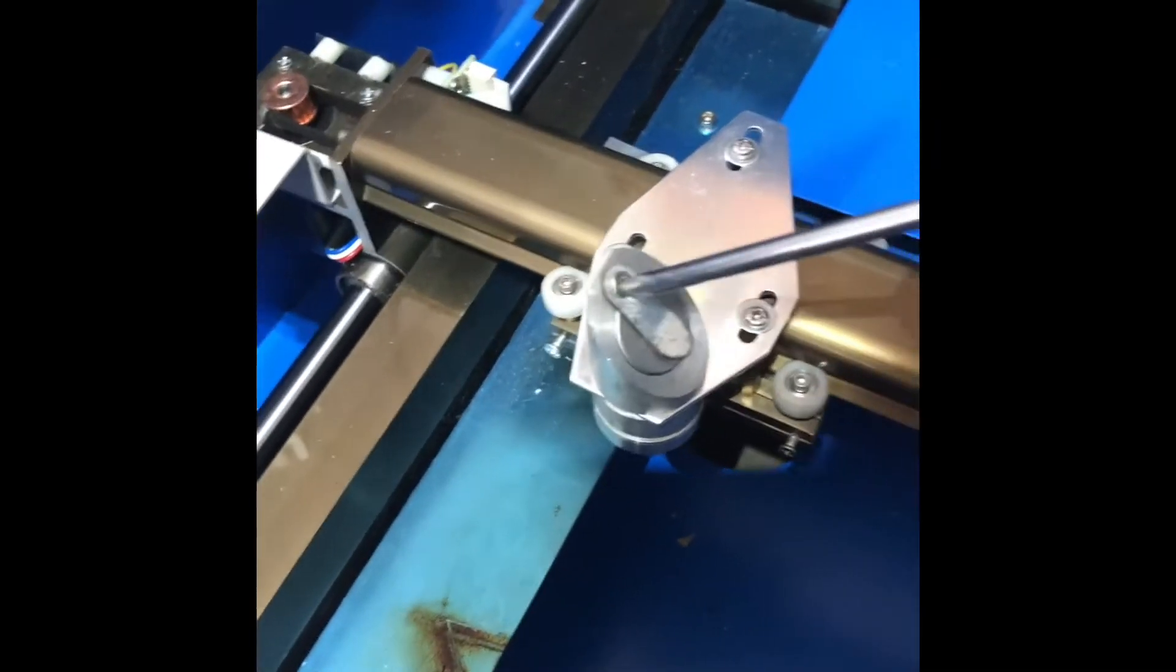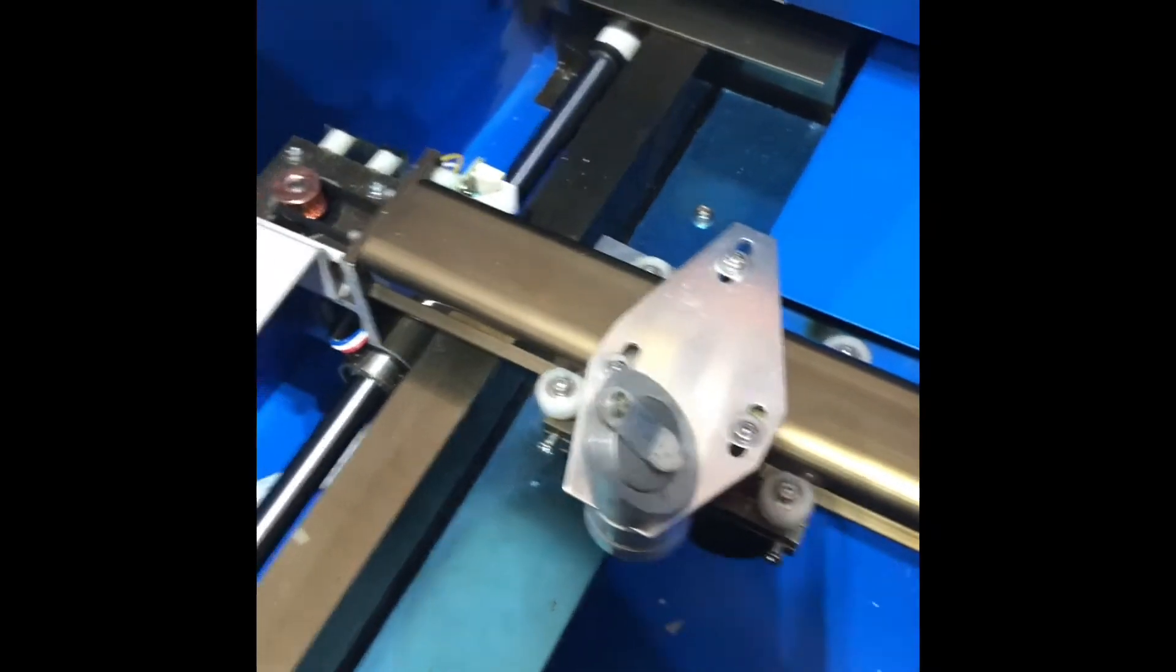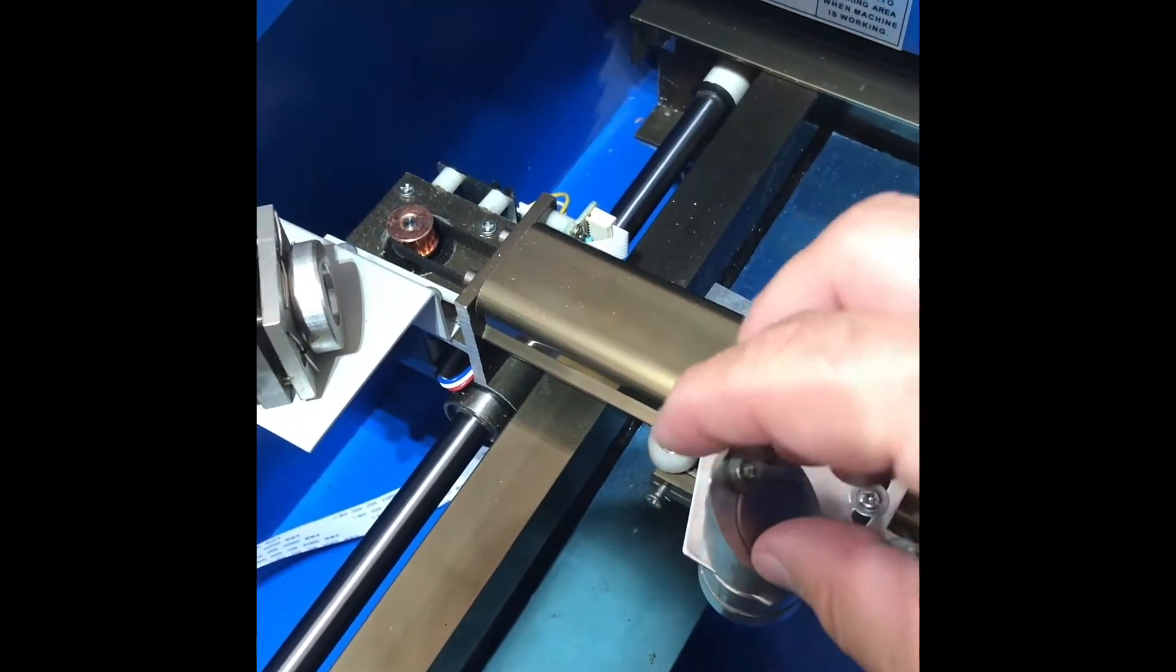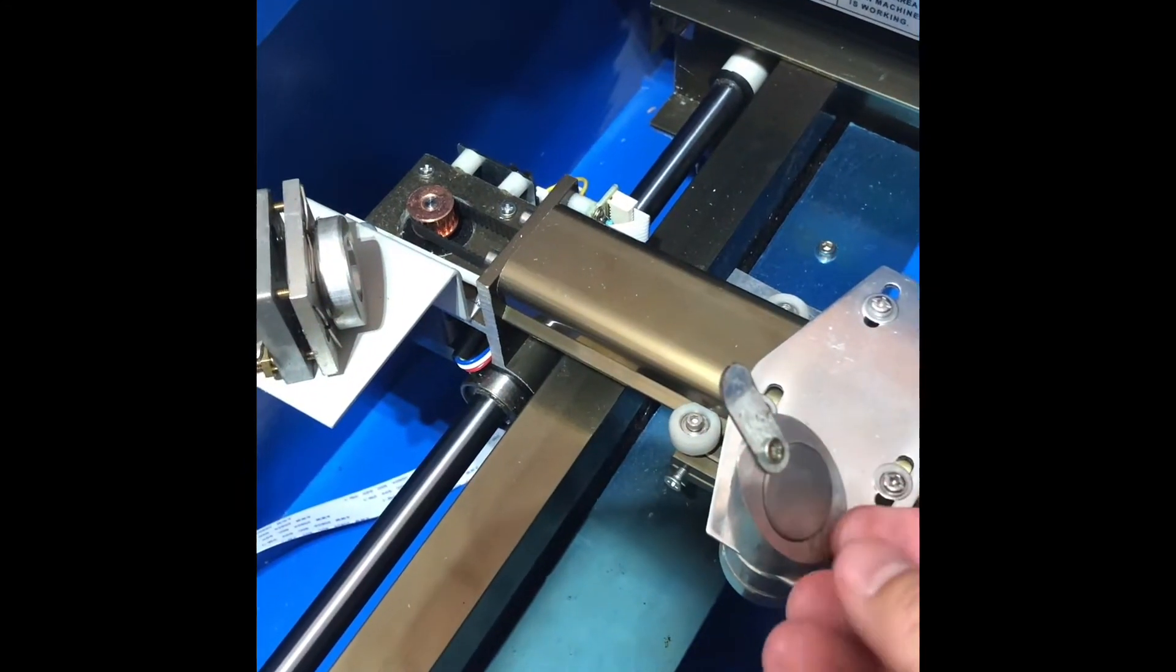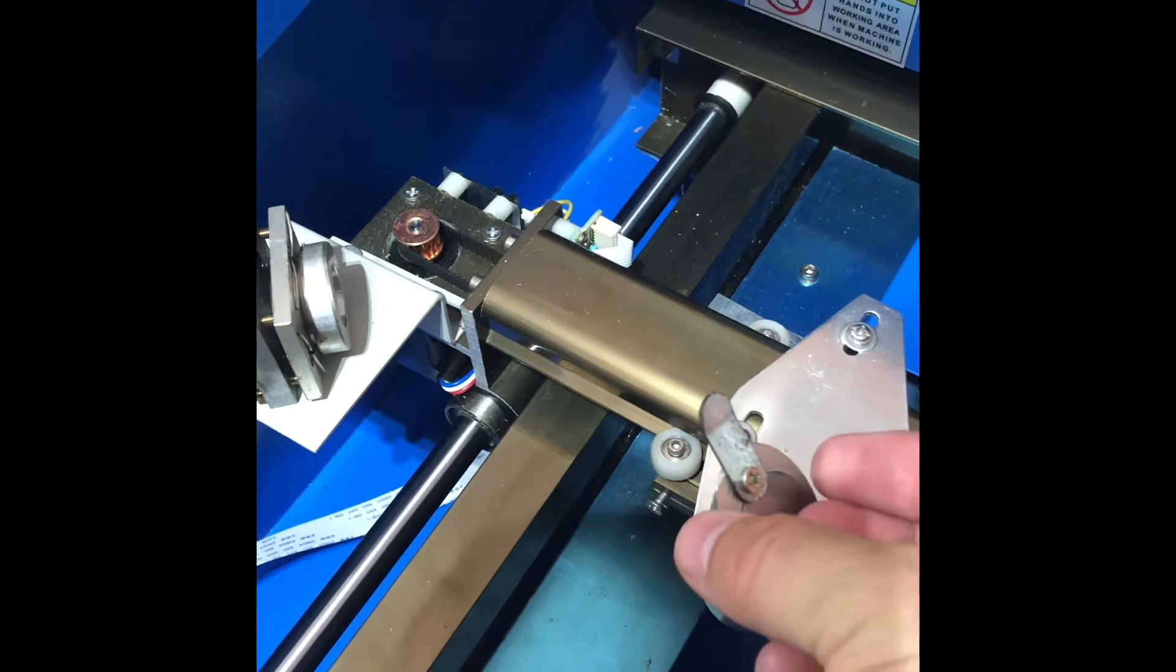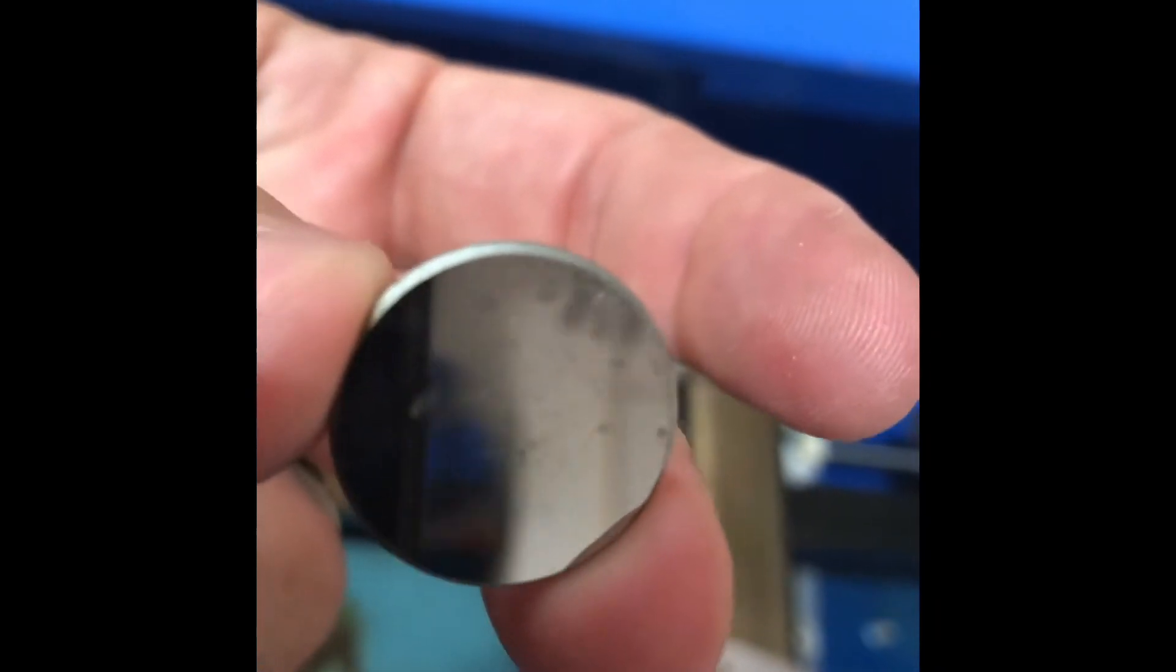So the first thing we're gonna do is I'm going to loosen up this mirror. See if I can do this with one hand without completely messing up my mirror. So I got the mirror out. This is kind of interesting. I've only really run it for a little while. You can already kind of see how it's burning on there.